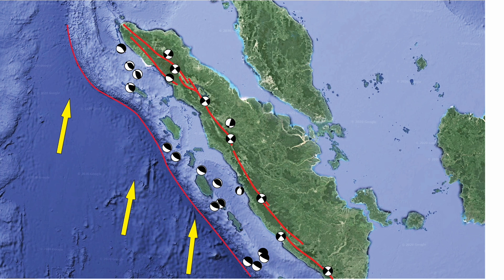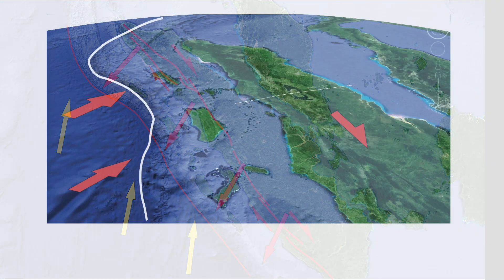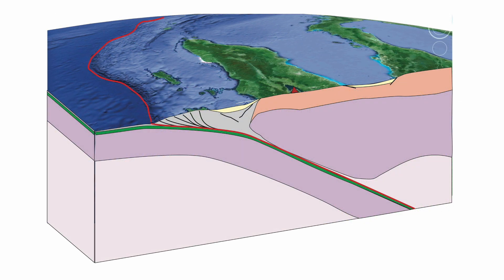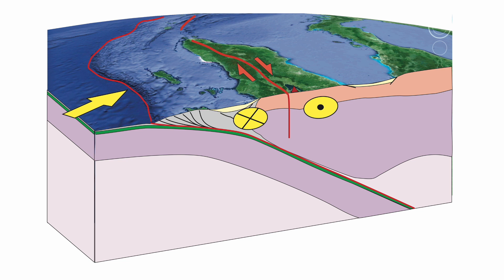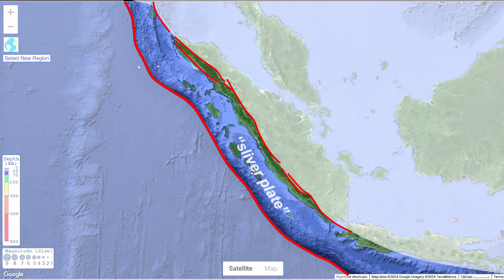We can explain the complex beach ball pattern of active deformation revealed by earthquakes by partitioning of the oblique convergence across this segment of the plate boundary. And moving back to 3D, here's how it looks. The Great Sumatran Fault carving through the upper plate. But this means the fore-arc is moving relative to the rest of Eurasia and the Indian Ocean floor. Some people think of it as its own plate, a so-called sliver plate, a slice of Eurasia.